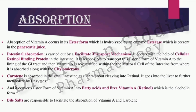For absorption, it is necessary that vitamin A should be converted in your gut into the esterase form with the help of the enzyme esterase, which comes from pancreatic juice. Then intestinal absorption takes place by a facilitated transport mechanism. There is a cellular retinol binding protein which helps to transport vitamin A from the inner compartment to the outer compartment.